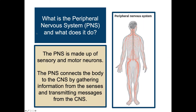The peripheral nervous system is made up of sensory and motor neurons. It connects the body to the CNS by gathering information from the senses and transmitting messages from the CNS. It has two main components: the somatic, which enables voluntary control of skeletal muscles, and the autonomic nervous system (ANS), which controls glands and internal organ muscles, influencing glandular activity, heartbeat, and digestion. The term 'autonomic' means self-regulation — like an automatic pilot that operates on its own, though you can consciously override it.